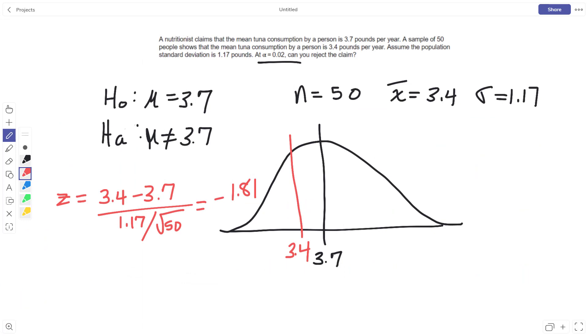Now you have to be careful because that is not the actual p-value. Why not? Because remember, this is a two-tail test. When I find this probability, that's only this piece right here, the 0.0351. Well, I need to double it because that's also that value. So doubling it would give me a p-value of 0.070.